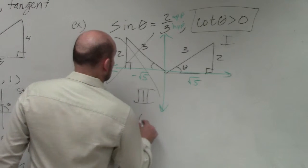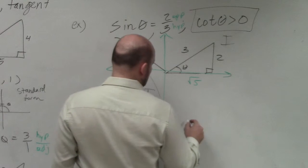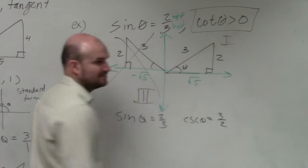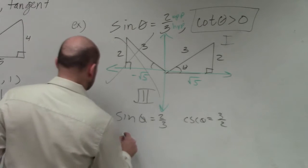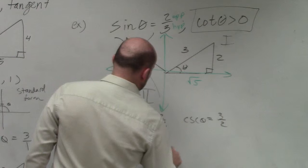So our sine of theta is 2 thirds. If sine of theta is 2 thirds, then we know that cosecant of theta is 3 halves. Right? Reciprocals? That was easy.